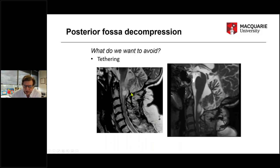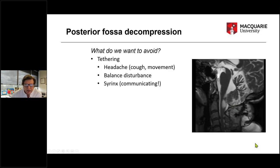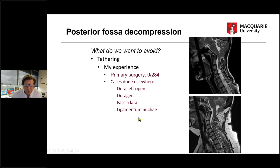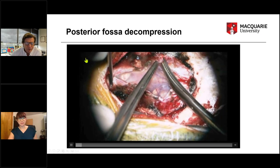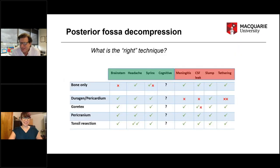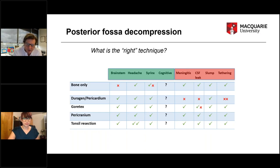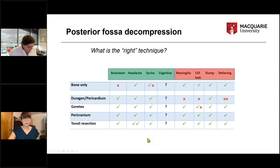This is tethering — the cerebellum completely stuck to the underlying patch graft. This is what happens with every heartbeat, and we definitely want to avoid that kind of problem. To put it all together: of the different techniques people are using, using a duraplasty with pericranium and resecting the tonsils is the most likely to achieve what you're trying to achieve and avoid what you want to avoid. But I just reiterate that we don't really know what is underlying all these problems.